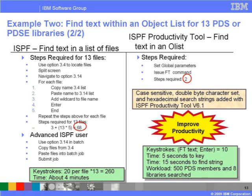The ability to use case-sensitive, double-byte character set, and hexadecimal search strings has been added with ISPF Productivity Tool version 6.1.